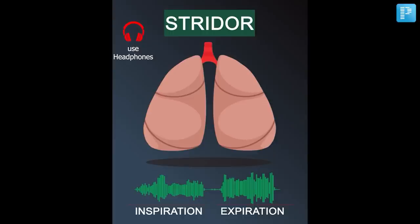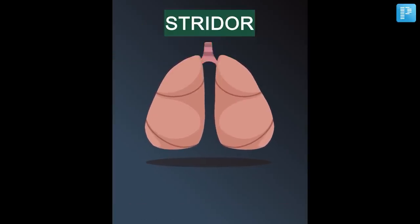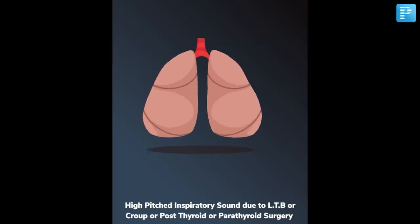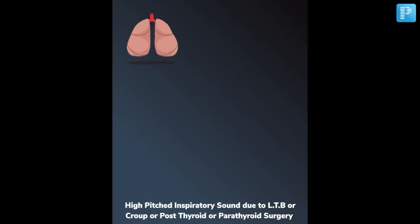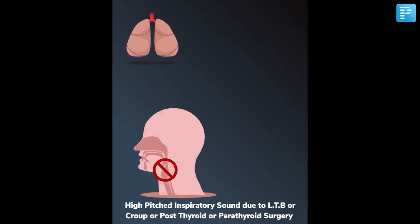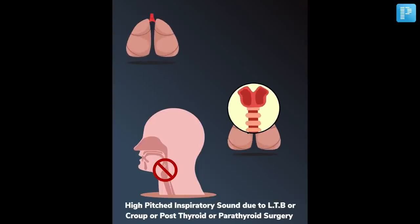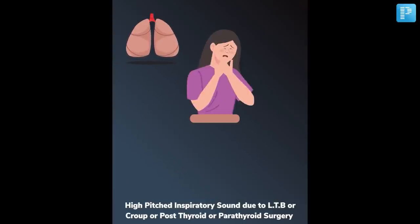Next up is stridor, which is a medical emergency. It is a high-pitched inspiratory sound that can occur due to laryngotracheobronchitis — also called croup in children — or most importantly after thyroid surgery.